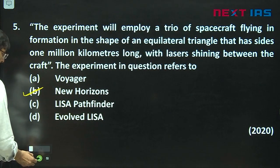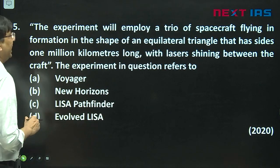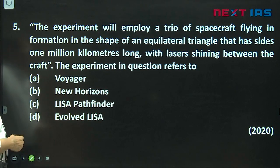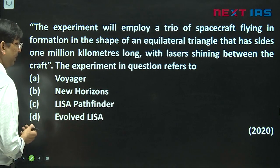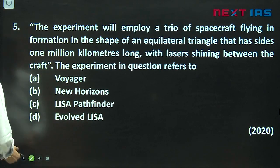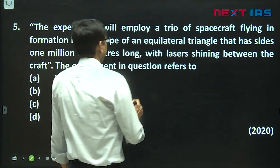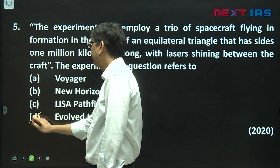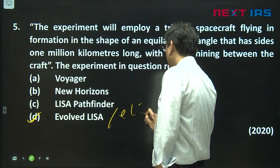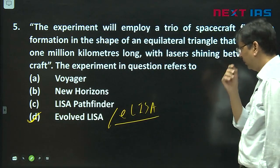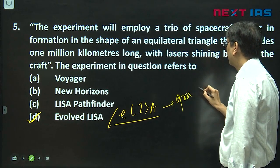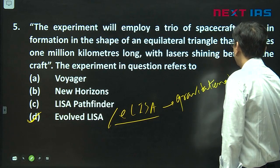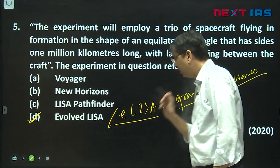Looking at this question: 'The experiment will employ a trio of spacecraft flying in formation in the shape of an equilateral triangle that has sides one million kilometers long, with lasers shining between the craft.' The experiment in question is evolved ELISA — this is called ELISA — and it is for the detection of gravitational waves.